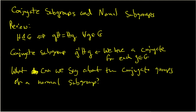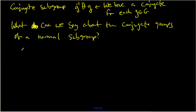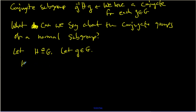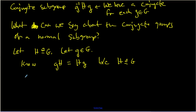We're going to start with H equal to a normal subgroup of G. Now I'm going to let little g be an arbitrary element of capital G. What I know is that the left coset is equal to the right coset, because H is normal inside G. In set language, the left coset is nothing more than the set of gH's, where H is ranging over all of the elements of capital H.